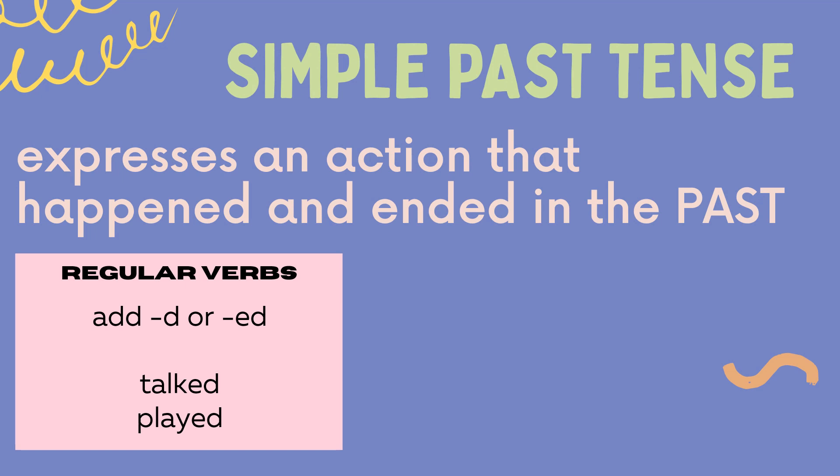Regular verbs form their Past Tense by adding D or ED at the end of the base word. For example, 'talked' and 'played.' To form the Past Tense of the verb 'talk,' we add ED. To form the Past Tense of the verb 'play,' we also add ED.